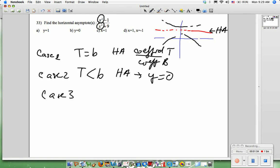Case three is where we have the top is bigger than the bottom. Then the HA is going to be an oblique line. And oblique lines, it's those lines that either are going to go sideways or it's going to go down that way. So those are the oblique lines, and that's going to have to do long division.